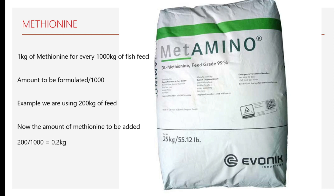To calculate the volume of methionine in fish feed, it is recommended to use 1 kg of methionine for every 1000 kg of fish feed. If you are formulating less than 1000 kg, the formula to use is: amount to be formulated divided by 1000. For example, for 200 kg of feed: 200 divided by 1000 equals 0.2 kg of methionine to be added.